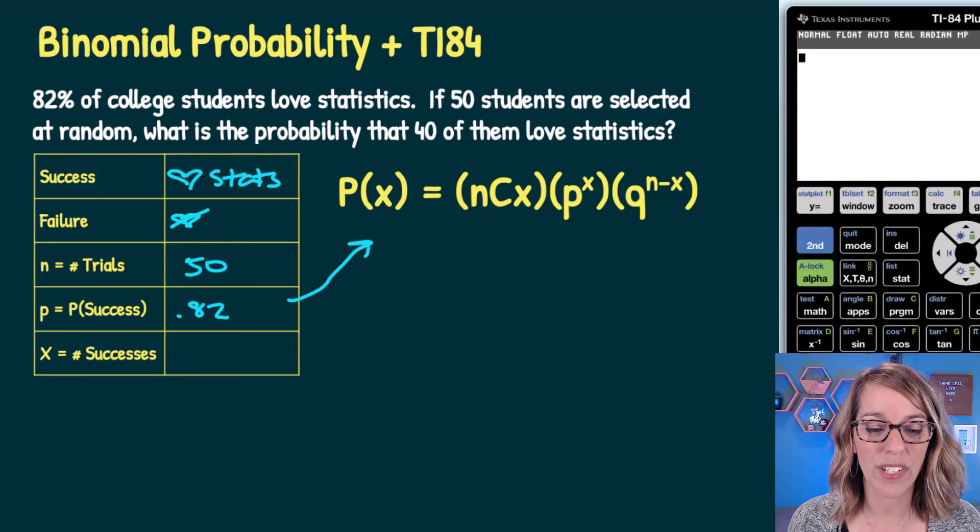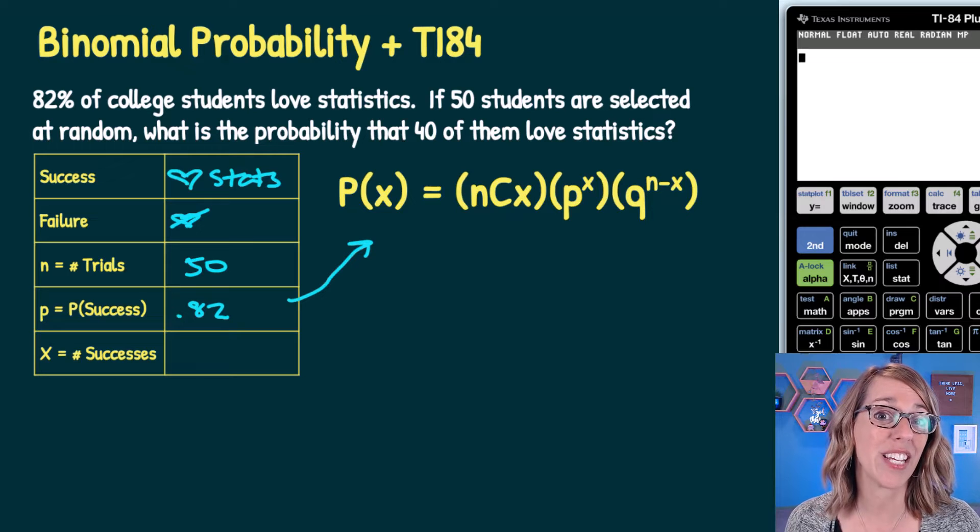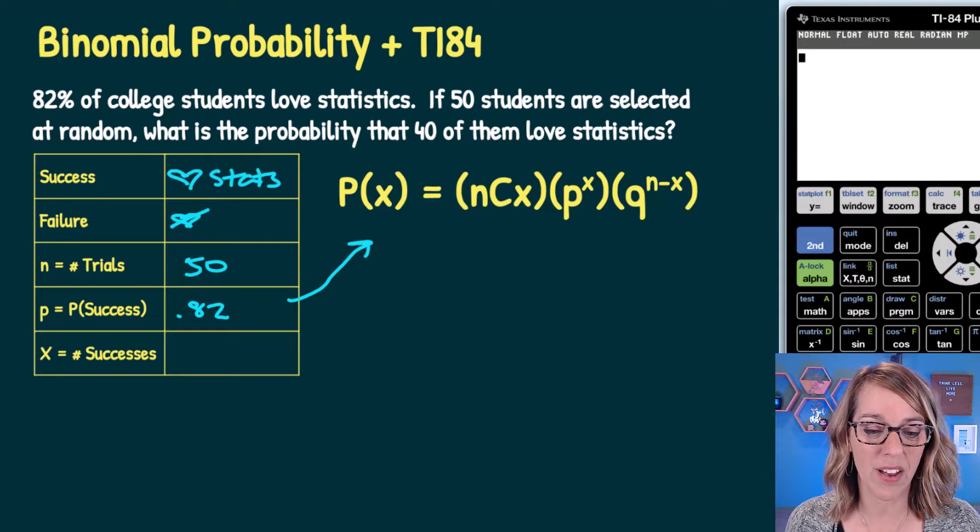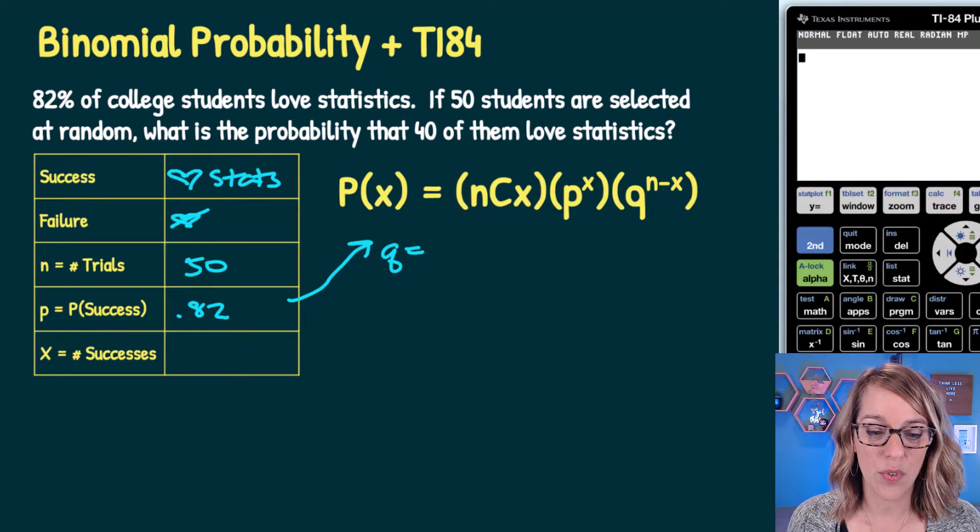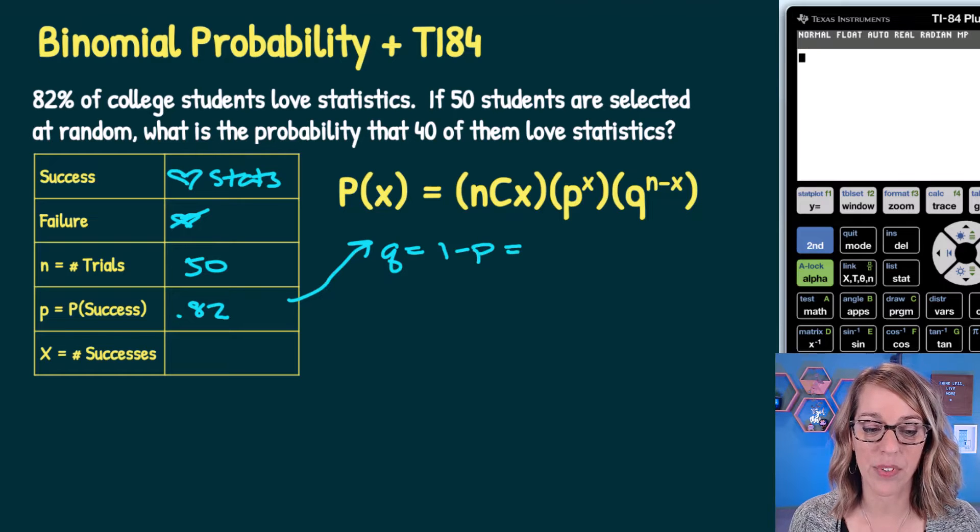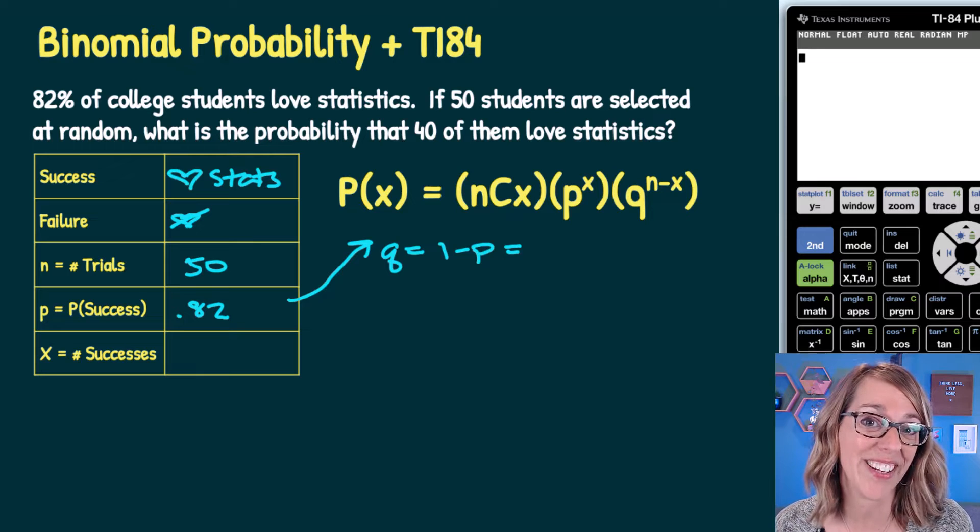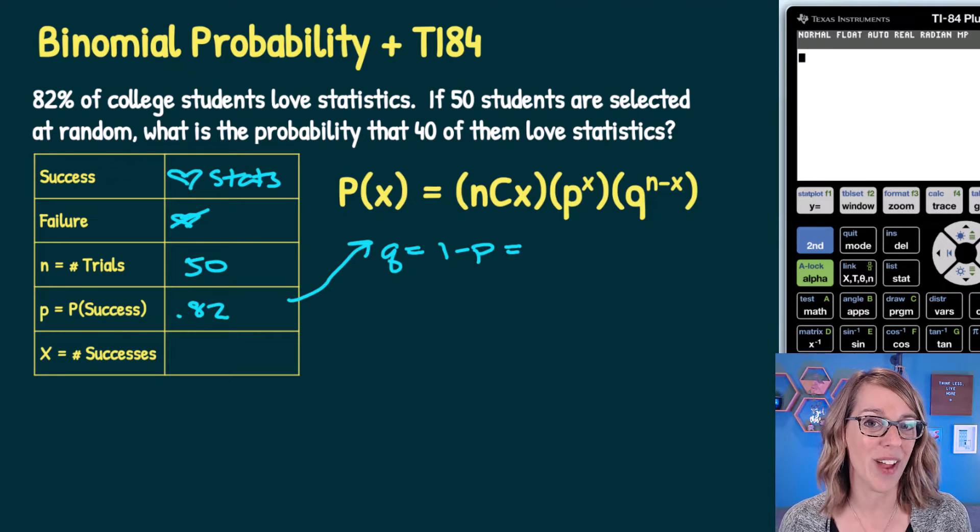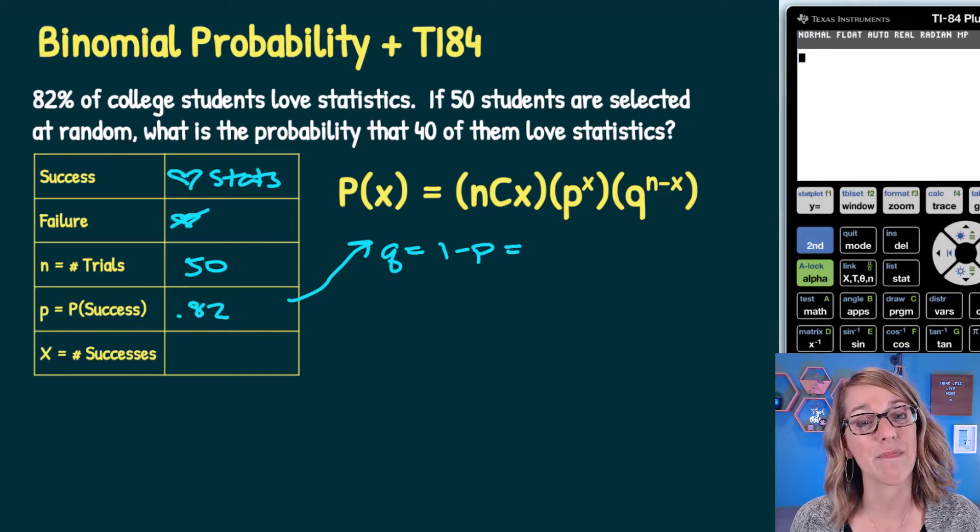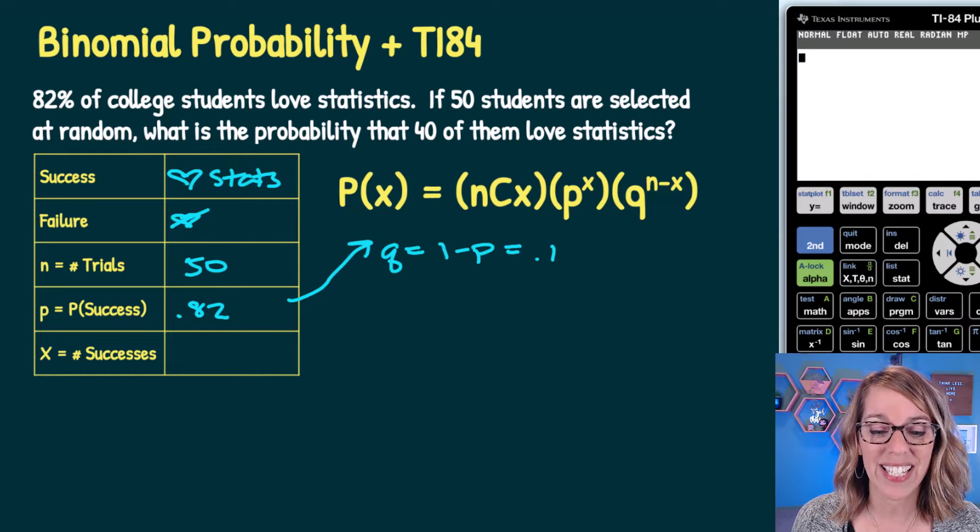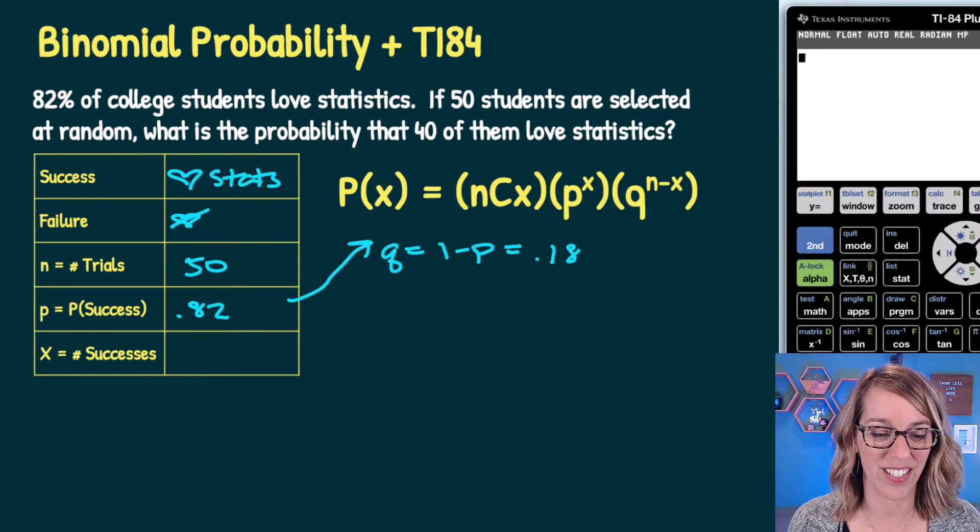If we were using this formula, I would also need Q, the probability of a failure. Q is 1 minus P, which is the probability of anything else. If 82% love stats, that means 100% minus 82%, or 18%, don't love statistics.